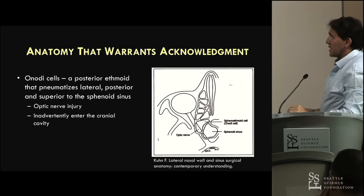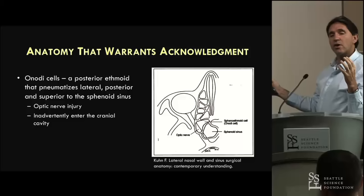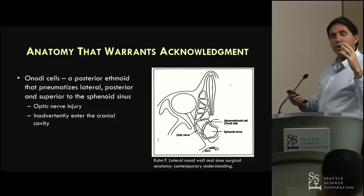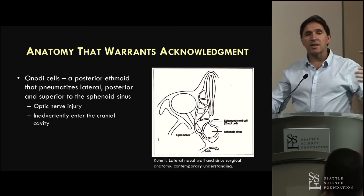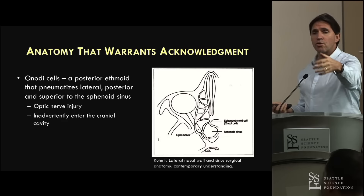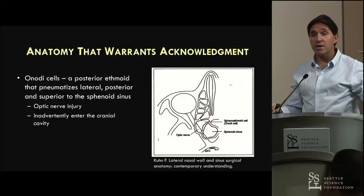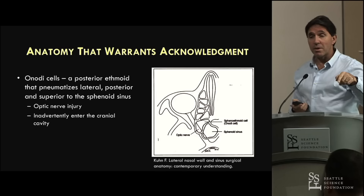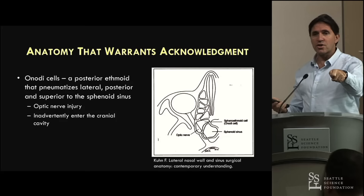A couple of things warrant acknowledgement in the sphenoid sinus. One is onodi cells - something you really have to identify on your preoperative CT scan. The onodi cell is simply a posterior ethmoid air cell which is pneumatized either lateral or superior, going around the sphenoid above. The problem with an onodi cell is that it typically pneumatizes around the optic nerve and causes dehiscence of the optic nerve. If you don't recognize you're in an onodi cell, you might think you're still in the posterior ethmoid and that the sphenoid is behind it. With old Lynch-Howard procedures done in the 70s and 80s, that was the commonest problem - people going through the posterior ethmoid and entering the cranial cavity.